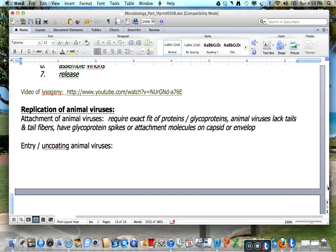Animal viruses require an exact fit of the proteins and glycoproteins. Animal viruses lack tails and tail fibers but have glycoprotein spikes or attachment molecules on the capsid or envelope. There are a few ways for animal viruses to enter and encode.